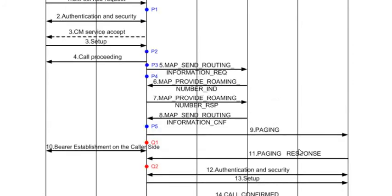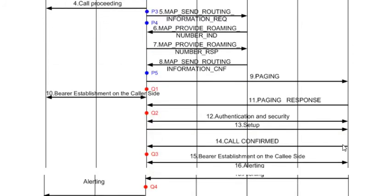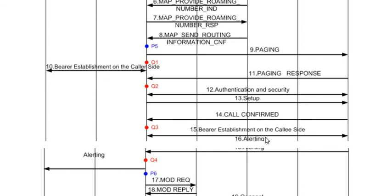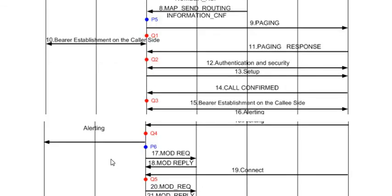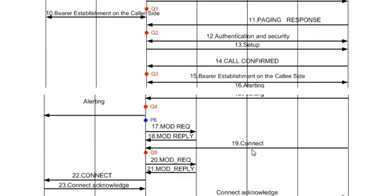The called party is sent a Setup message containing information about the calling party — that is, the CLI. Once the Call Confirmed message is received from the called party, bearer establishment procedures are initiated, first on the originating side and then on the terminating side. Once the traffic channels are assigned and the end-to-end connection is established, the Alerting message is sent both ways, and the A party can hear the ringback tone.